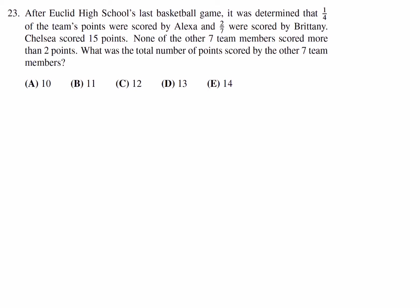After Euclid High School's last basketball game, it was determined that one quarter of the team's points were scored by Alexa and two sevenths were scored by Brittany. Chelsea scored 15 points. None of the other seven team members scored more than two points. What was the total number of points scored by the seven team members? We don't know the total number of points. So we have Alexa scores p over 4. I'll let p be the number of total points.